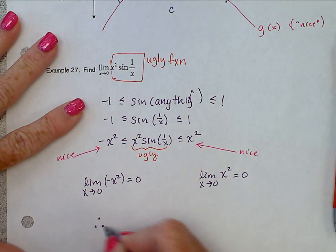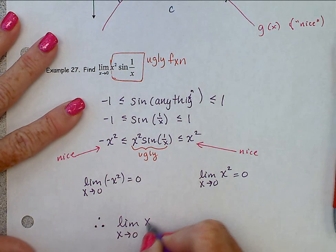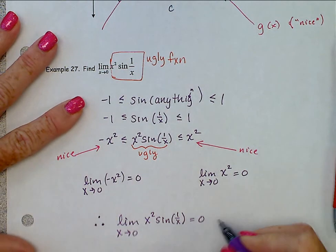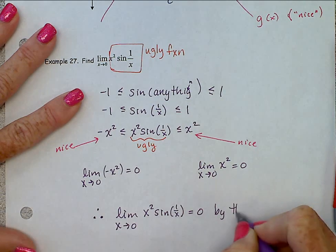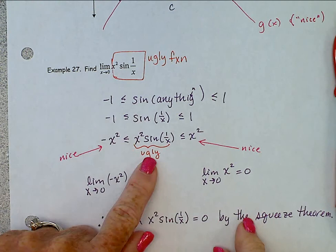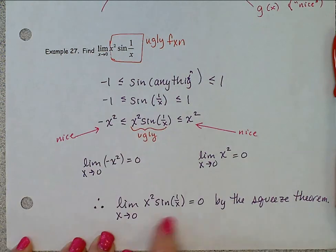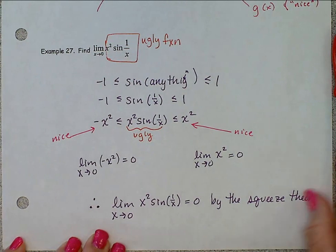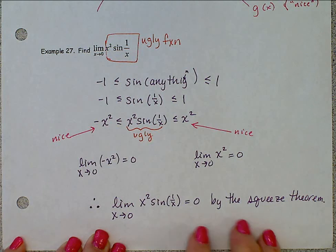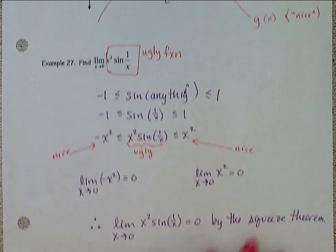Because you're wanting this ugly function trapped between two nice functions, which happen to have the same limit. Therefore, we can say the limit as x approaches zero of x squared sine one over x is also equal to zero by the squeeze theorem. We got this ugly function trapped between two nice functions that happen to have the same limit as x approaches zero. Therefore, this nasty one had the same limit. Okay. Thank you very much. Page 10 has been left blank intentionally, so there is no video for page 10.